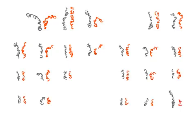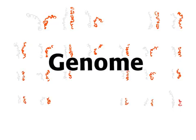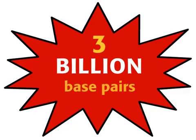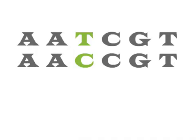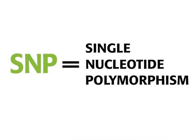An entire set of 23 human chromosomes is called a genome. The human genome is composed of 3 billion base pairs. Variation at a single base pair is called a SNP, or single nucleotide polymorphism.